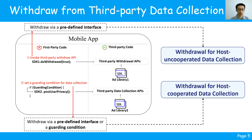We researched the withdrawals corresponding to third-party data collections. The first type of withdrawal is to invoke pre-defined withdrawal APIs to stop privacy collection — for example, invoking SDK1 to stop all privacy collection of SDK1. We named this host-uncooperated JORU. The second is to set guarding conditions for privacy collection to block such collection, such as using a guarding condition variable to block the data collection of SDK2. That is, host-cooperated JORU.